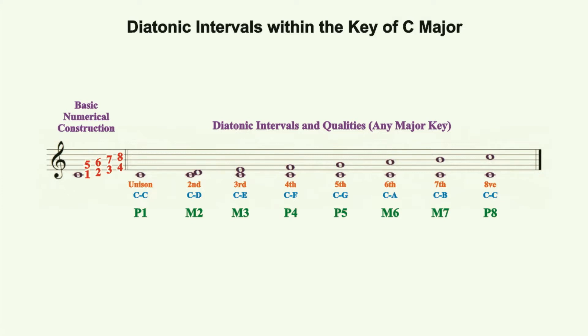Thus, every diatonic interval that we can make will contain only natural notes: C natural, D natural, E natural, F natural, etc.